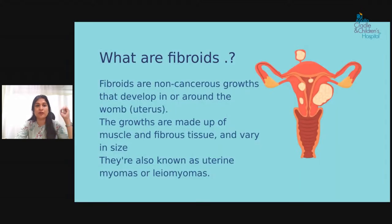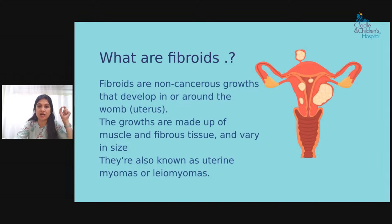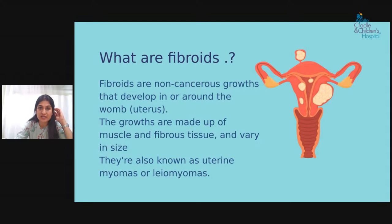What are fibroids? These are mostly non-cancerous growths that develop in and around the womb. Turning cancerous is very, very rare. This is the most common problem patients come to the clinic with daily. The growths come from muscle tissue and fibrous tissue and vary in size. They are also called uterine myomas or leiomyomas.